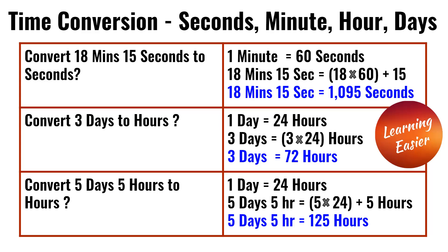Convert three days to hours. One day is equal to 24 hours. So three times 24 is 72. So three days is equal to 72 hours.